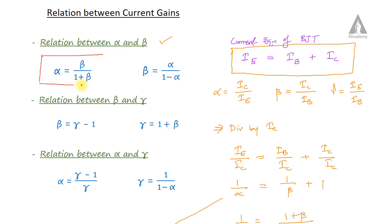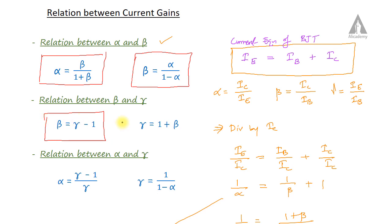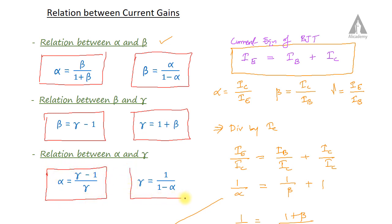So alpha is equal to beta by 1 plus beta, beta is equal to alpha by 1 minus alpha, beta is equal to gamma minus 1, gamma is equal to 1 plus beta, alpha is equal to gamma minus 1 by gamma, and gamma is equal to 1 by 1 minus alpha. These are the relationships between the current gains of common base, common emitter, and common collector configurations. I hope this session will be helpful for you — see you in the next session.